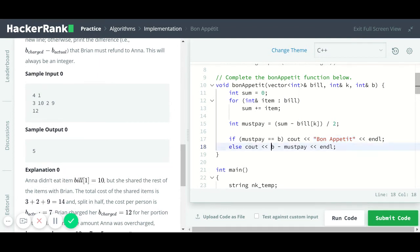Otherwise, I will just get the difference here by saying b, which is the amount she's asked to pay, minus the actual amount that she needs to pay. And then I will print this out with this cout statement here.